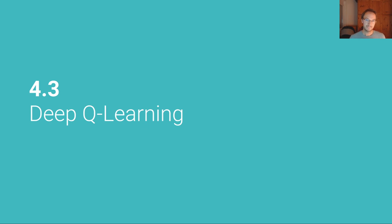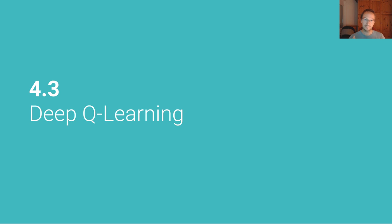We've seen Q-learning in the last unit. Q-learning is a reinforcement learning algorithm that handles simple state spaces — state spaces that are discrete and low-dimensional. But it can't handle high-dimensional state spaces such as the game of Go, where there's just too many possible states to enumerate, too many elements to be put in a table.